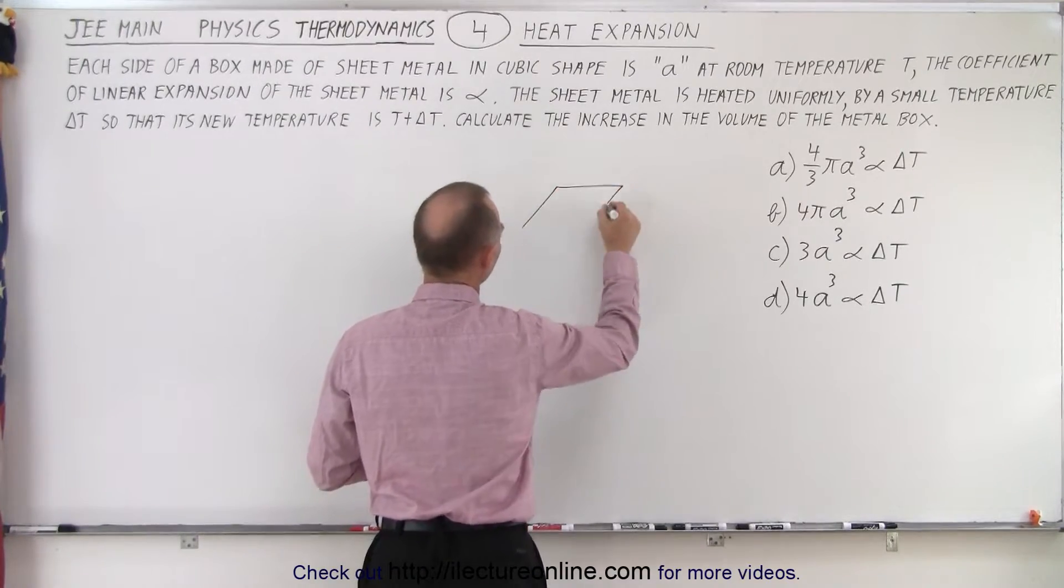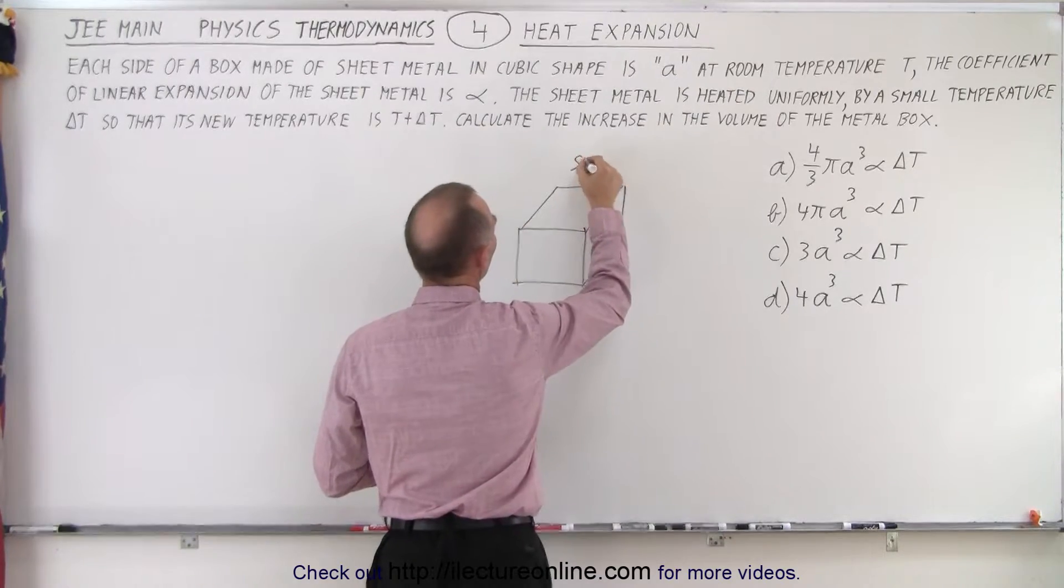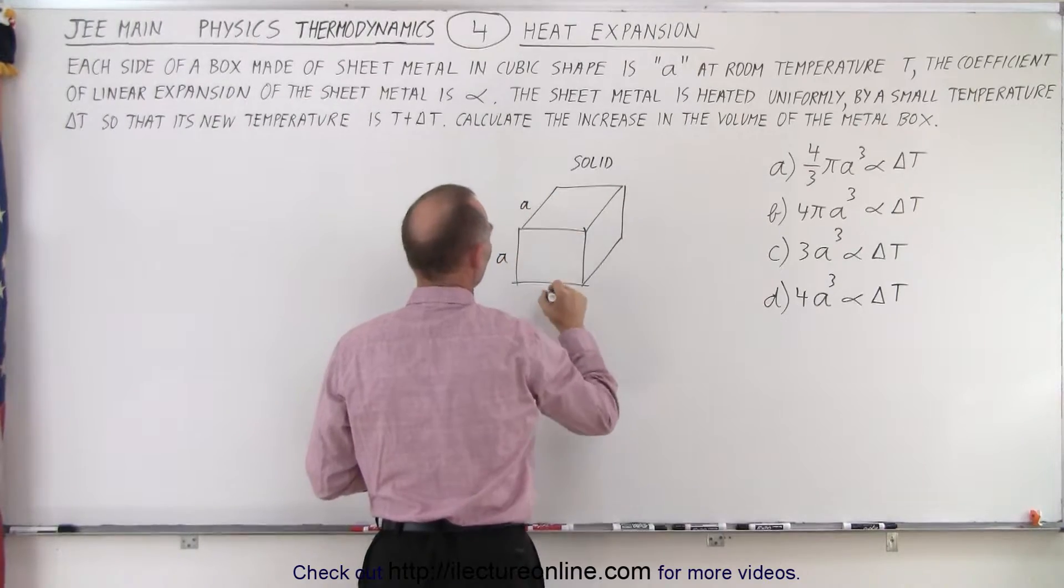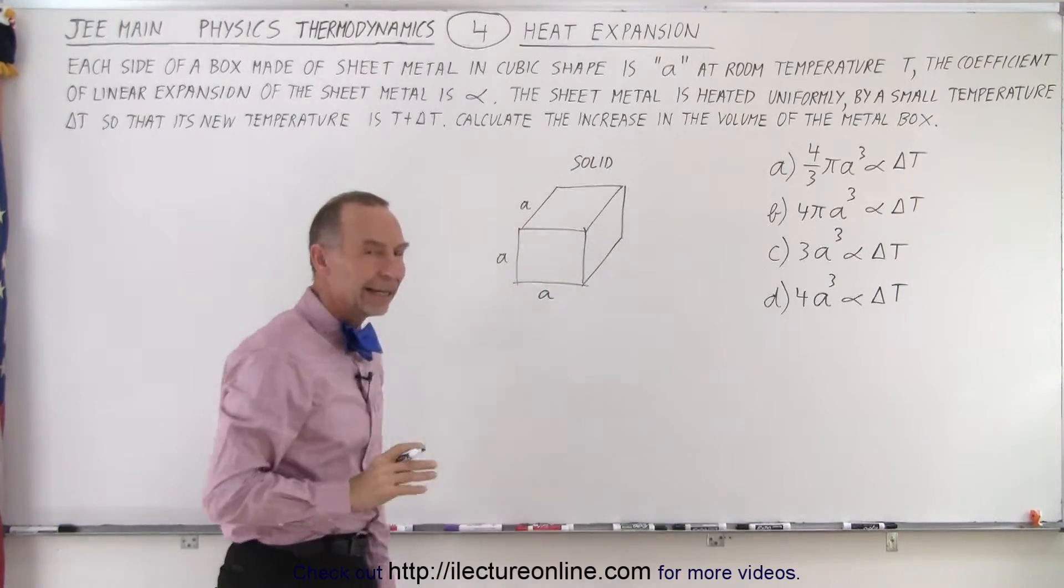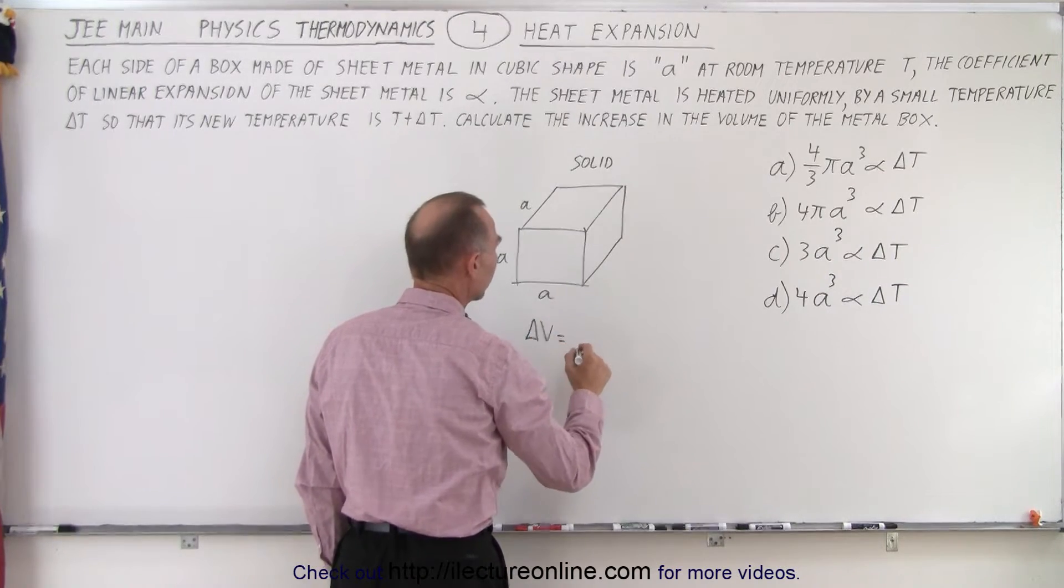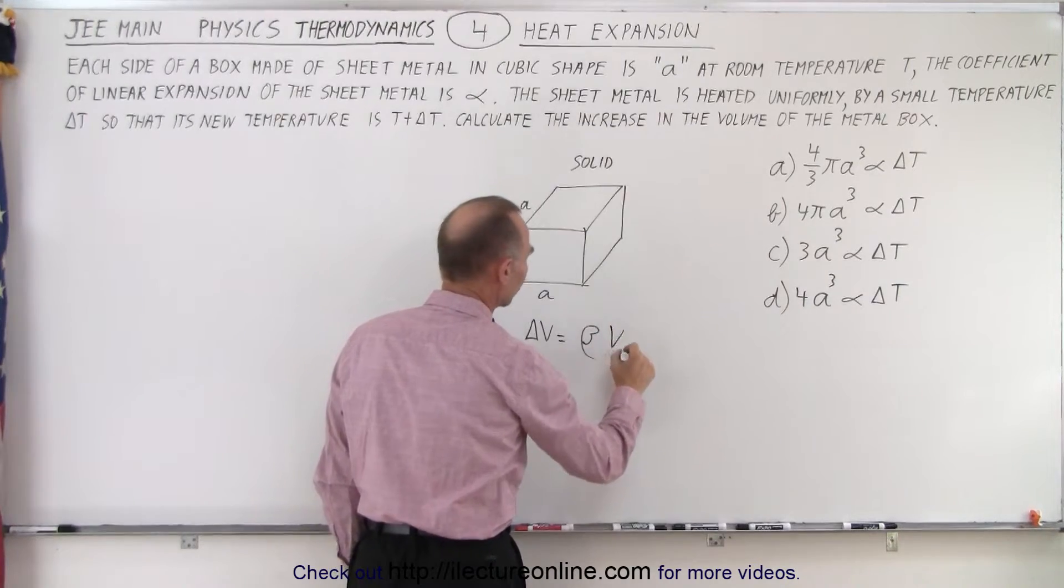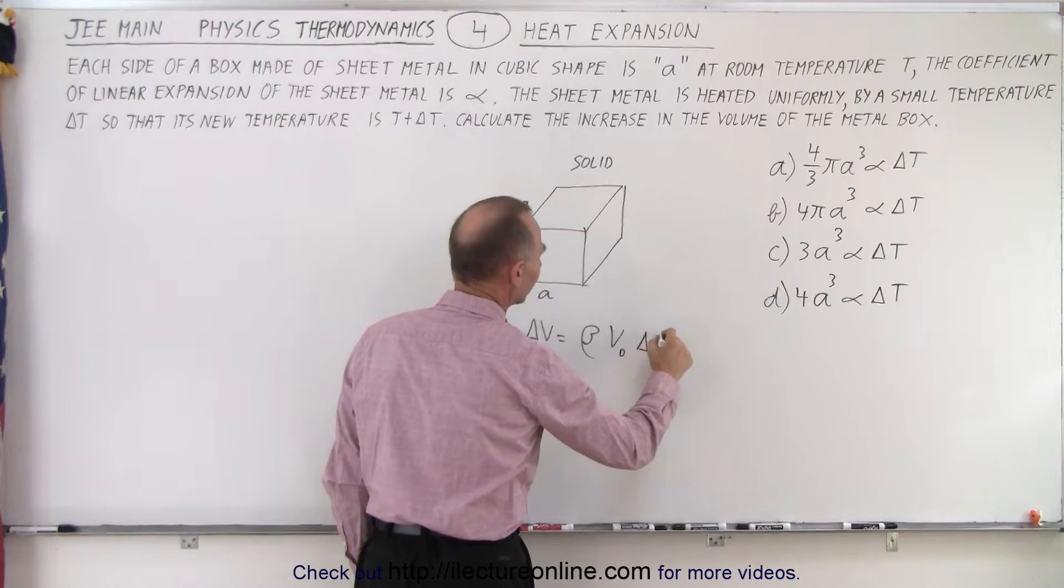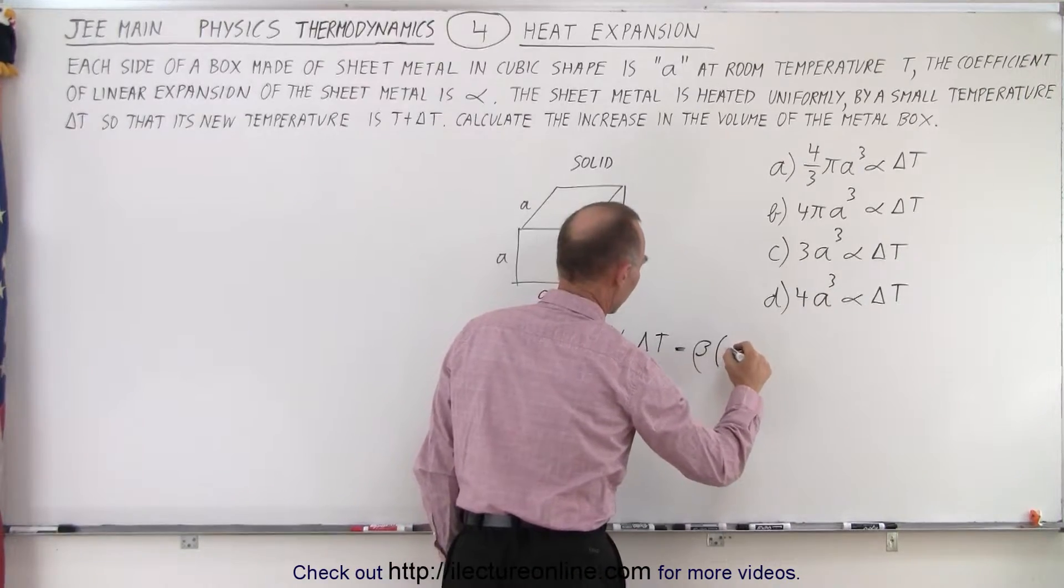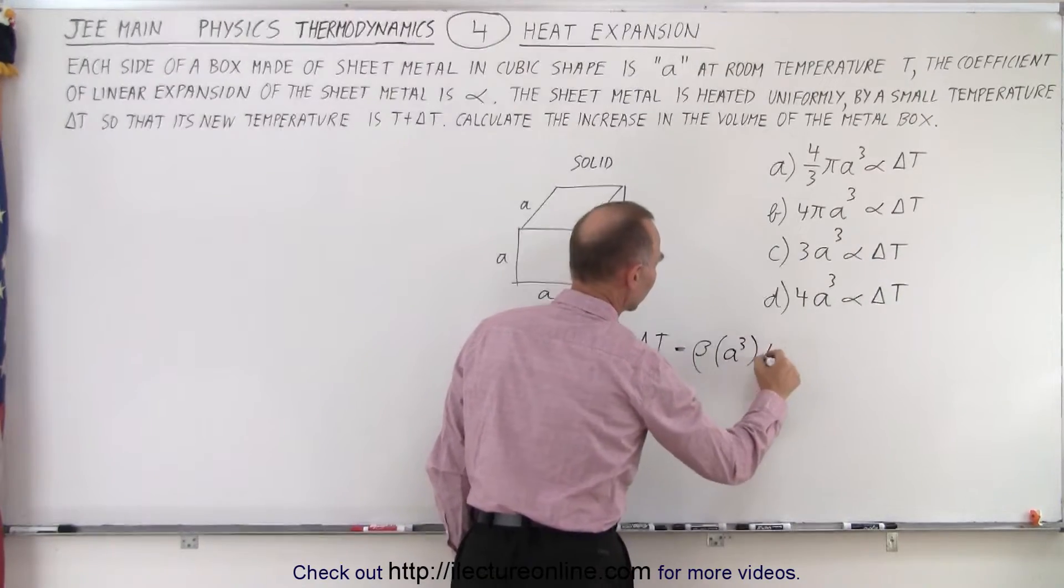So let's think about that. Let's draw a cube. If this was a solid cube and the sides have dimensions A, then the way you would find the increase in the volume, delta V, would be equal to the volume coefficient of expansion, which is typically called beta, times the original volume times delta T. So in this case, this would be beta times the volume, which would be A cubed, that's the original volume, times delta T.